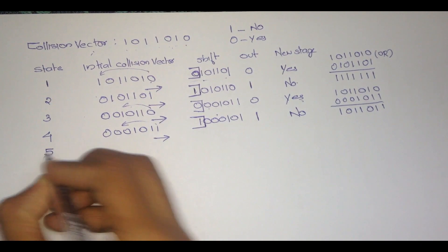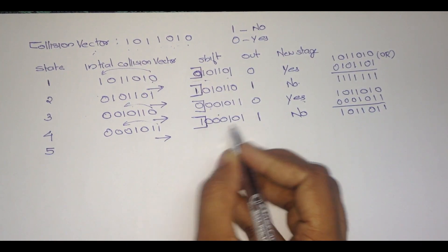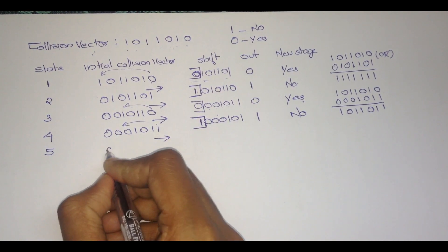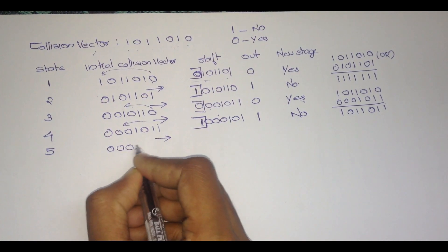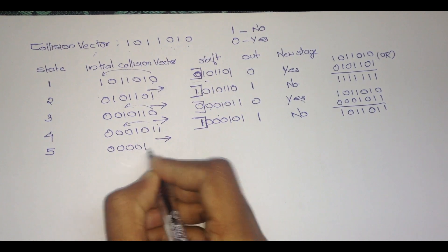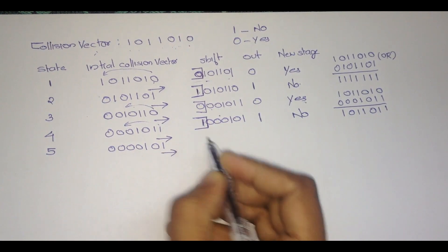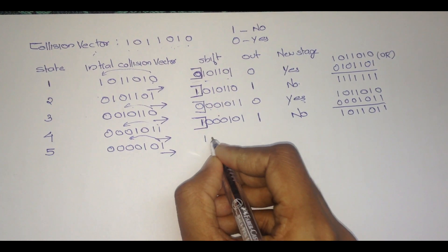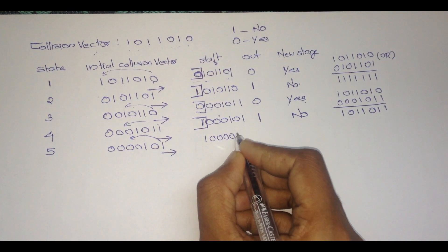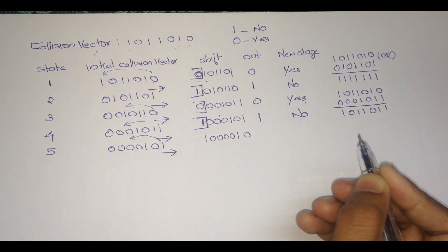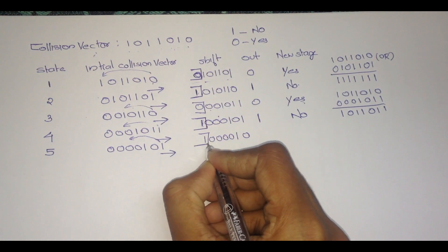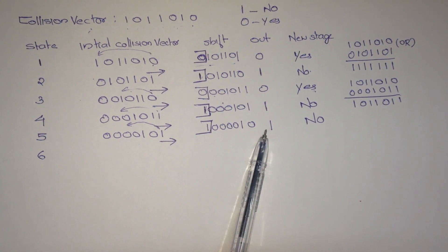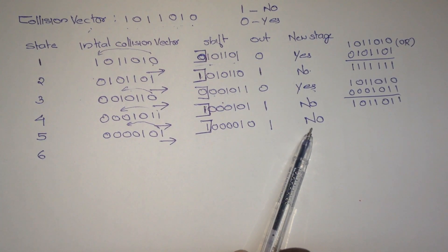At the fifth state, we again write this value. Here the value is 1, therefore we have to change it to 0. The result is: 0, 0, 0, 1, 0, 1. Now we have to again perform right shift; this value will become at first: 1, 0, 0, 0, 0, 1, 0. Again we have to out this value. Here 1 is out, therefore no new state occurs.